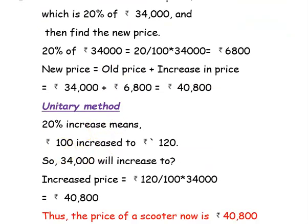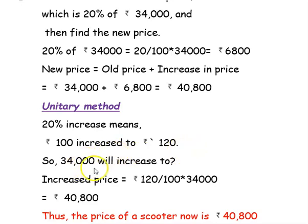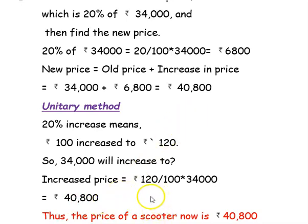The same thing can be done using the unitary method. A 20% increase means ₹100 is increased to ₹120. So ₹34,000 will increase to: 120 × 34,000 ÷ 100 = ₹40,800. The answer in both cases is the same. Thus, the price of the scooter now is ₹40,800.